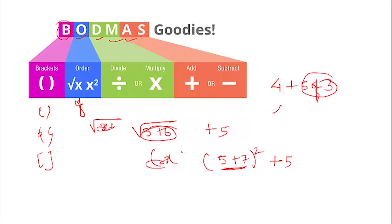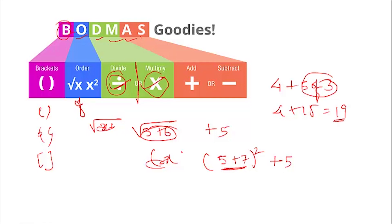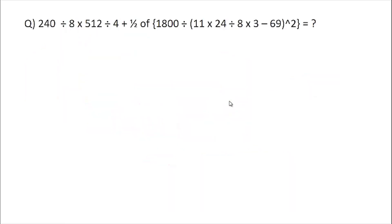So for '5 of 3', that is 5 × 3 = 15, giving a value of 19. Then, after handling Order and 'of', you do Division and Multiplication — division comes before multiplication. Then you do Addition, and finally Subtraction.